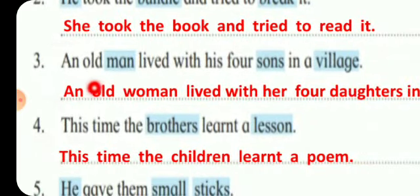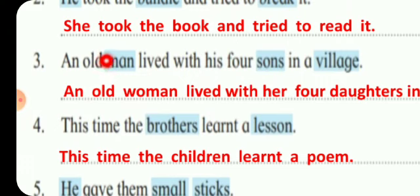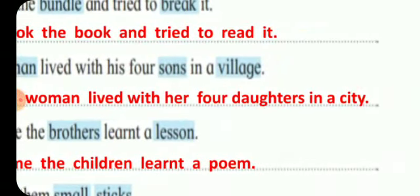Now the third one is: 'An old man lived with his four sons in a village.' The words to change are 'village,' 'sons,' and 'man.' So we write: 'An old woman lived with her four daughters in a city.' Instead of 'man' we write 'woman,' instead of 'sons' we write 'daughters,' and instead of 'village' we write 'city.'